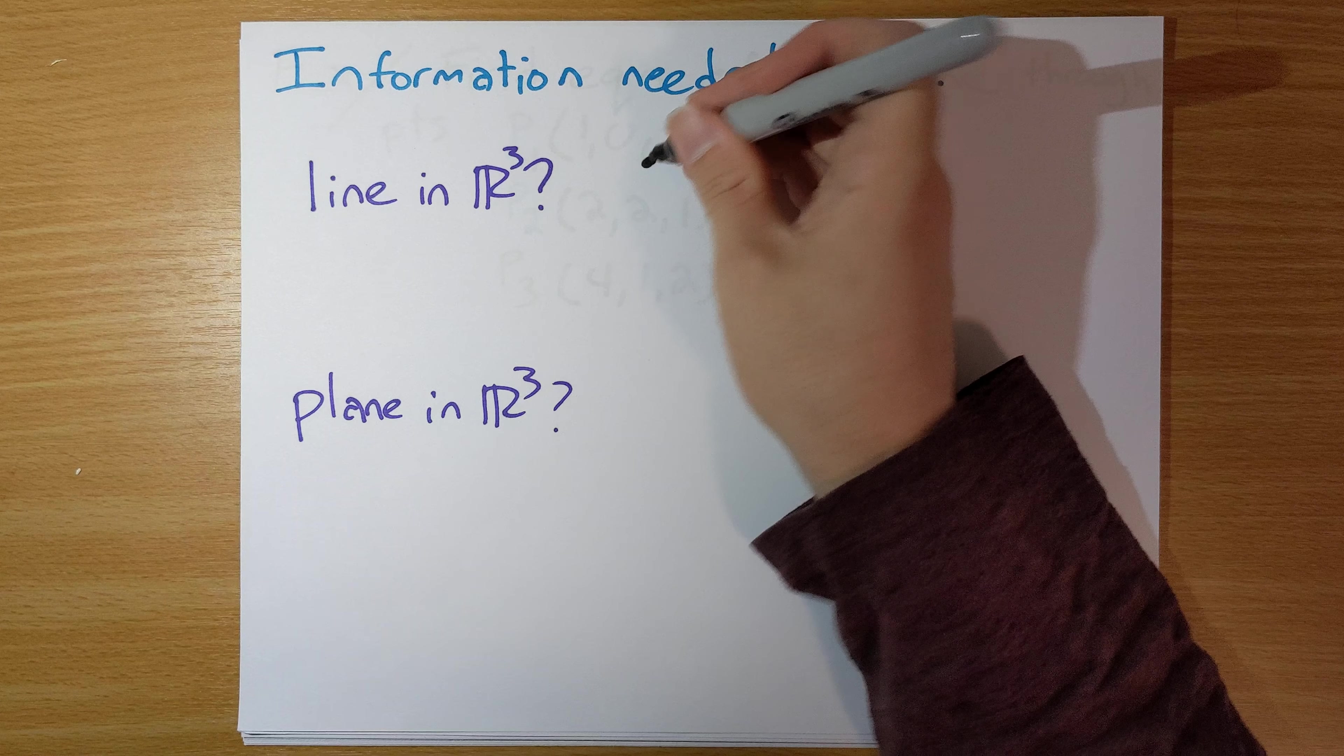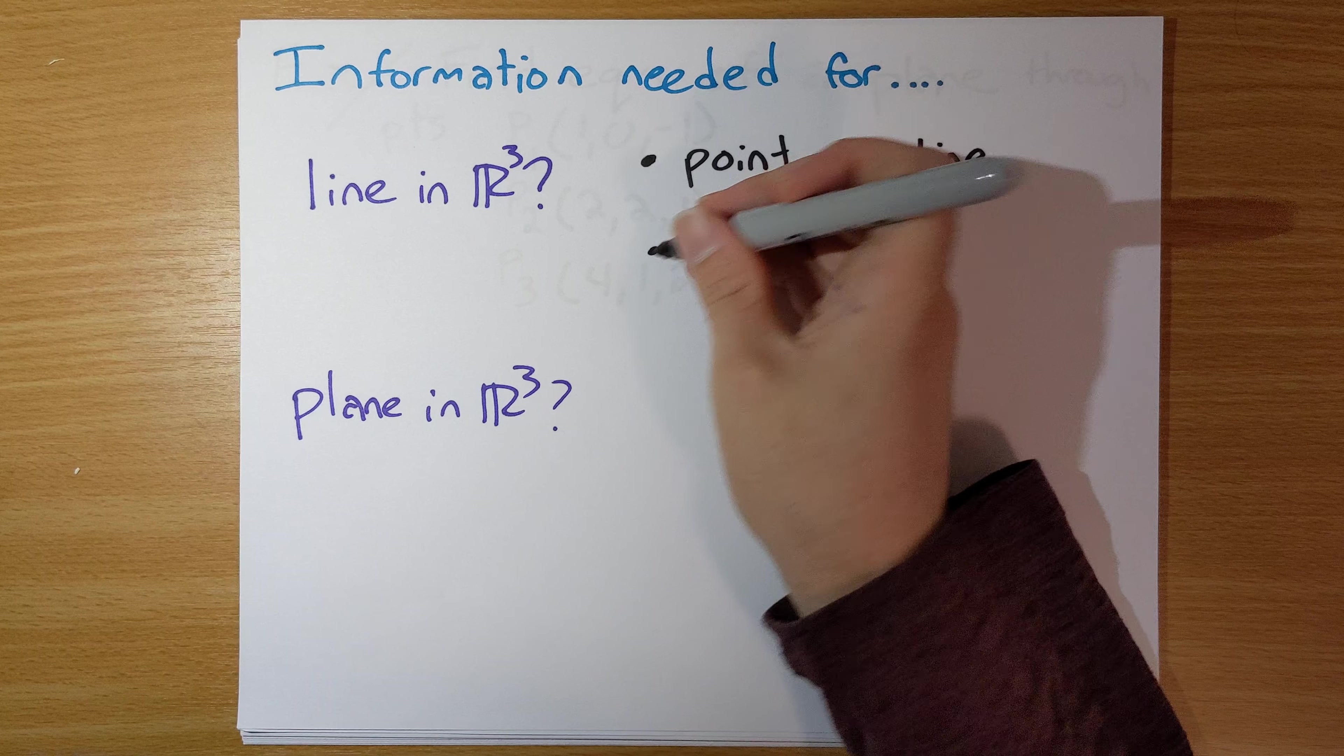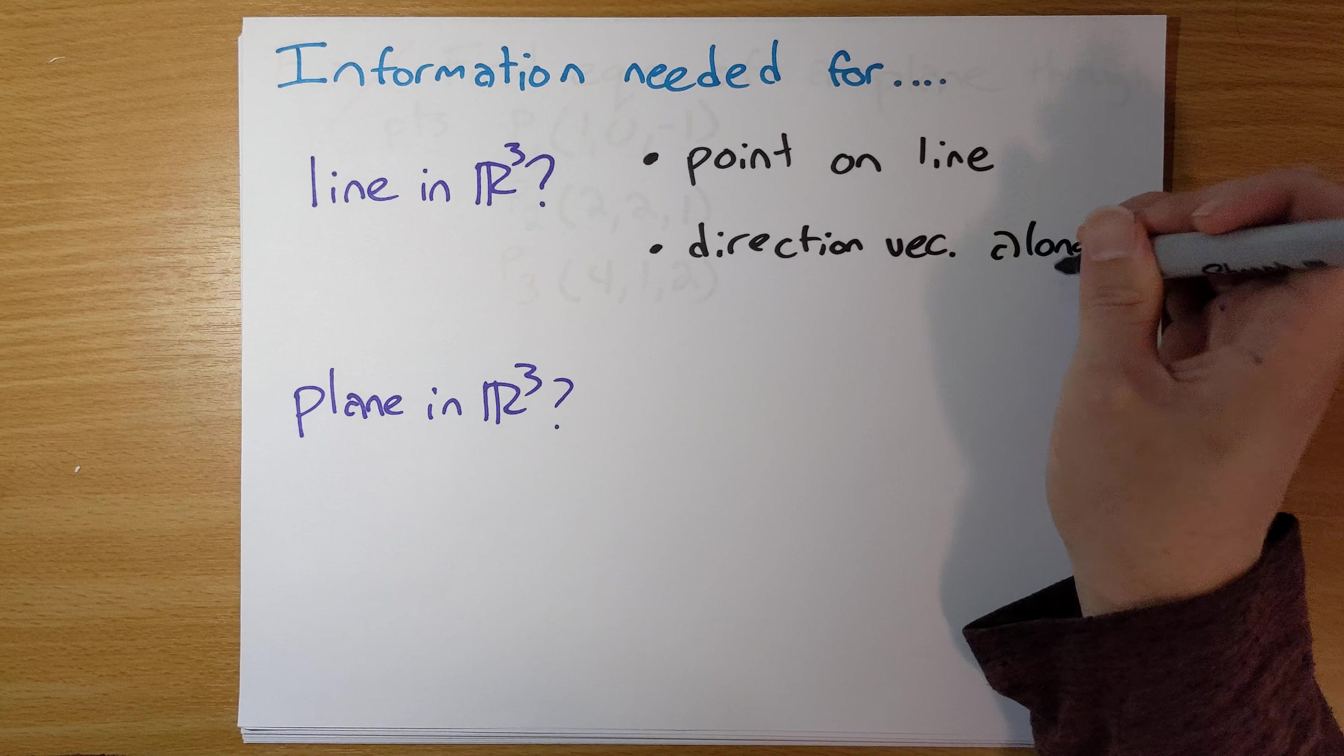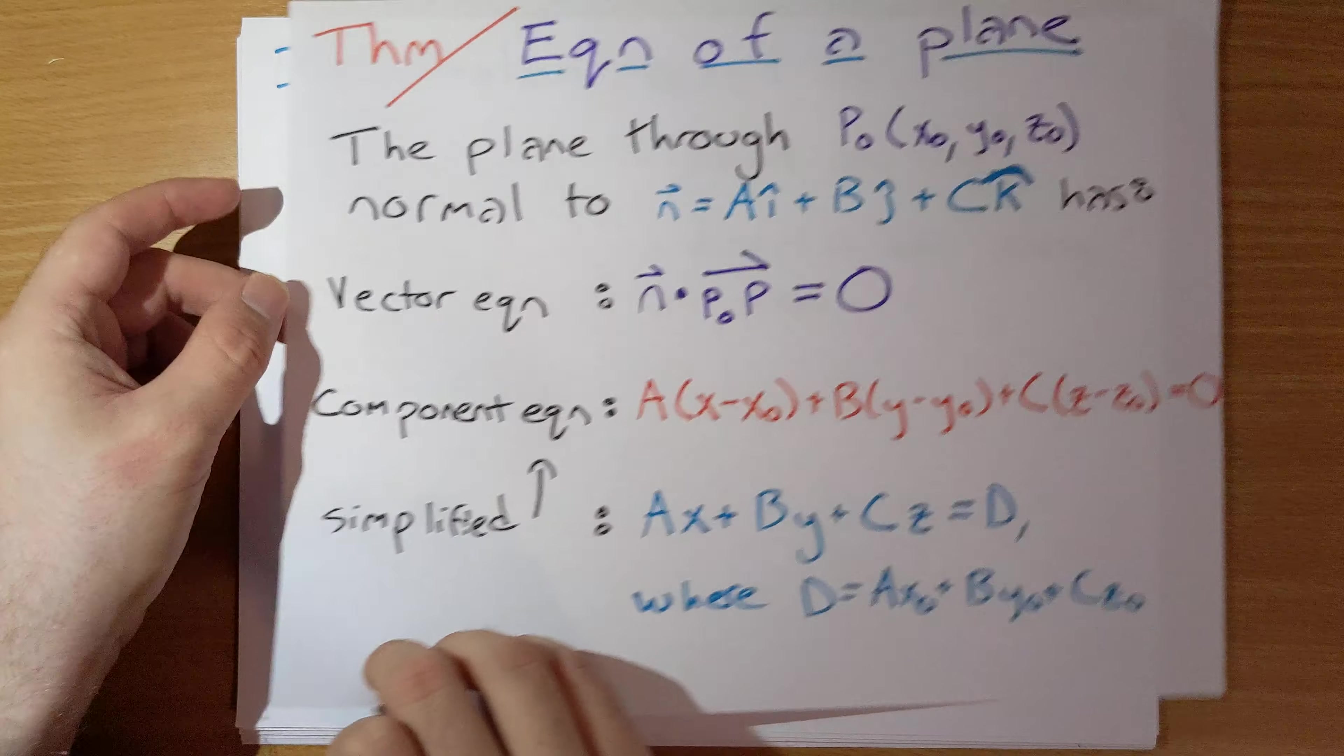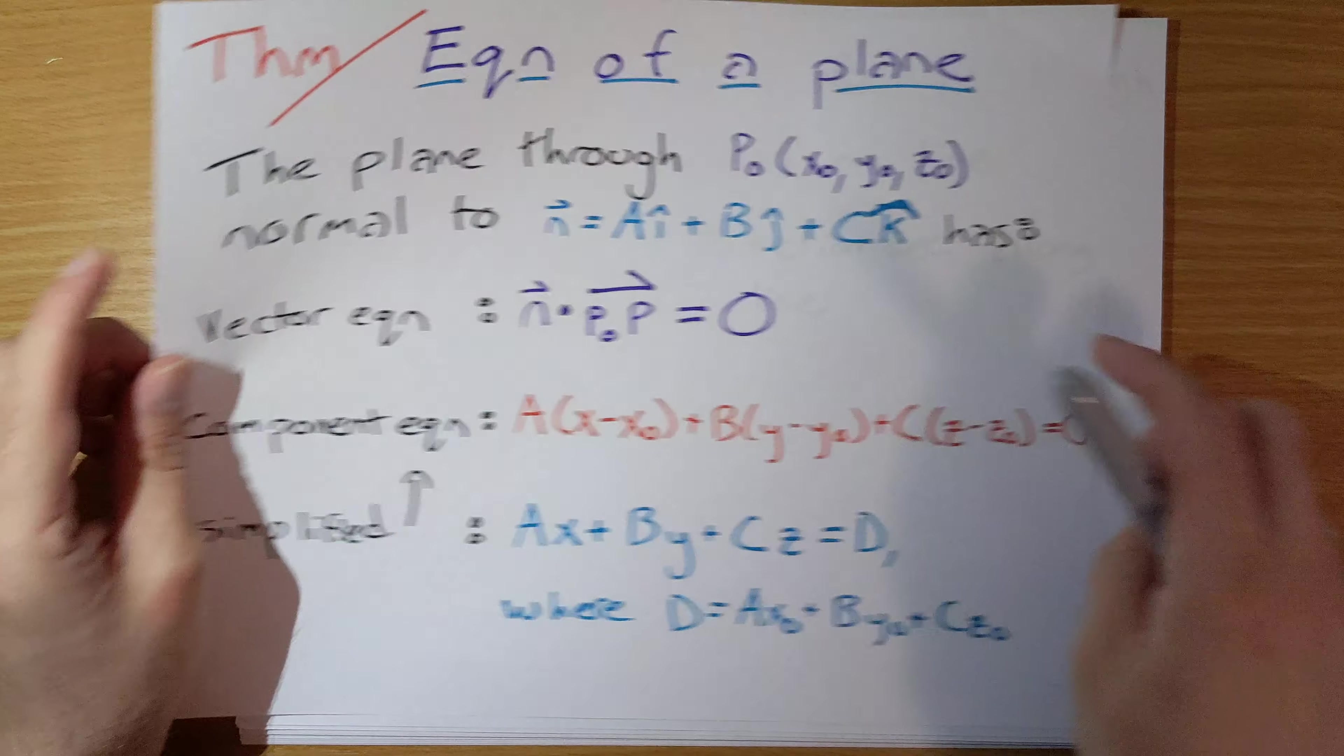So for a line, you need a point on the line and you need a direction vector along the line. But for a plane in R3, what do we need here? We need a plane through the point normal to this vector here.